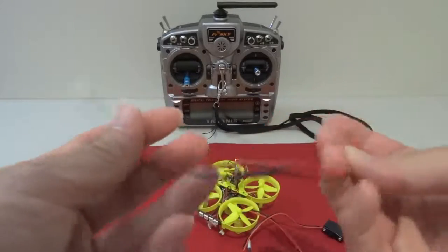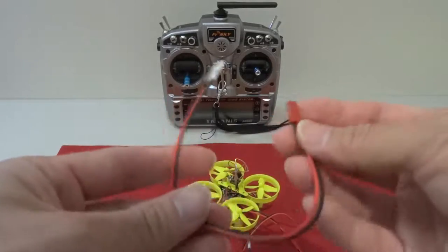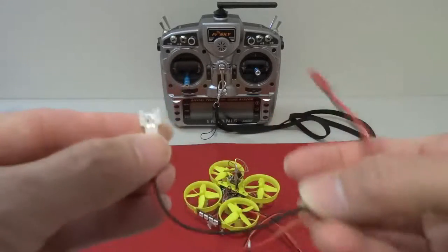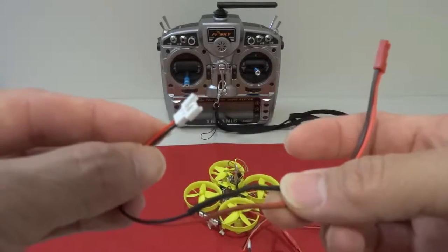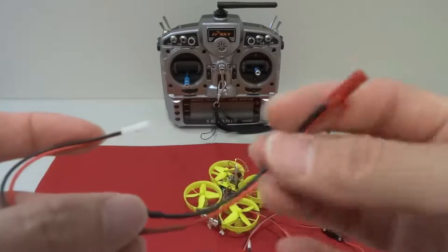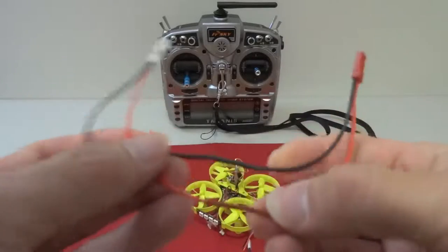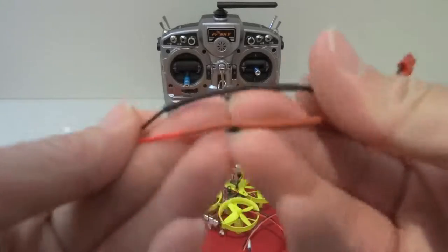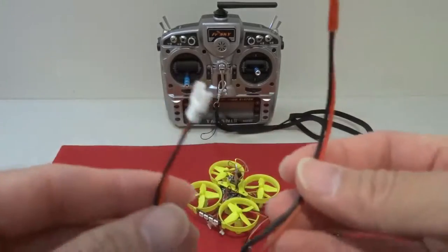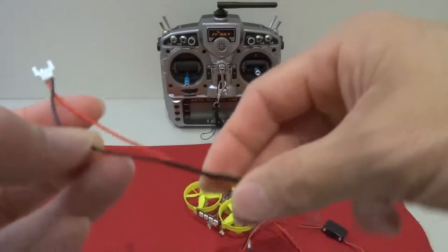This one I had to make my own, so I just joined the female micro Losi to the male JST. Just using your soldering iron, solder the wires together and also use heat shrink. Make sure that you got the polarity right.